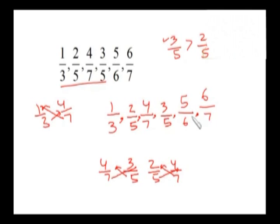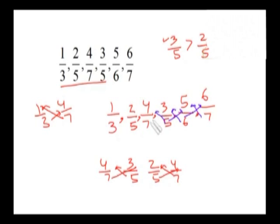We have done this arrangement so quickly and so fast. If you also practice it will be done even faster. You can also make a cross check at the end. Starting from the rightmost side: it's 35 and 36, so correct; it's 18 and 25, correct; it's 20 and 21; it's 14 and 20; it's 5 and 6. So the order we have written is quite correct.